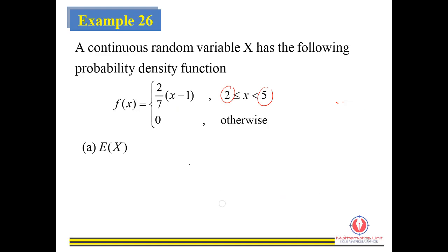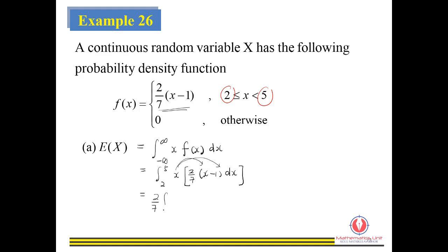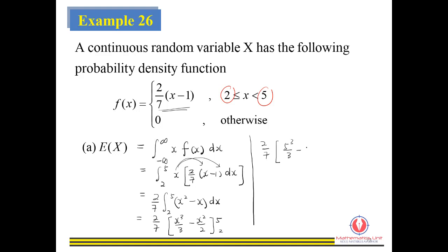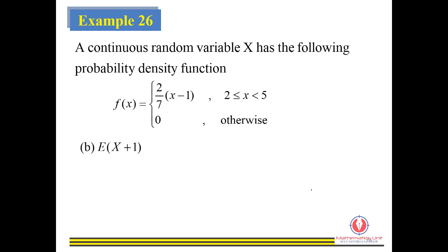Next, we go to Example 26 — how to find the expectation integrating from 2 to 5. We multiply X with the given function and expand, taking 2 over 7 outside. Then we expand X squared, integrate that, integrate X, and substitute the limits 2 to 5. Writing down the substitution, we calculate E(X) and get 57 over 7.